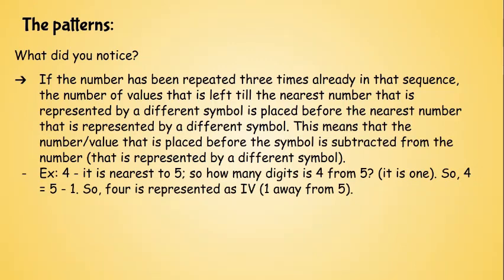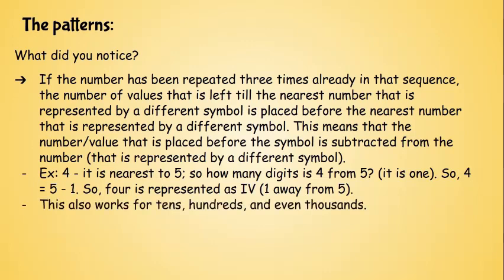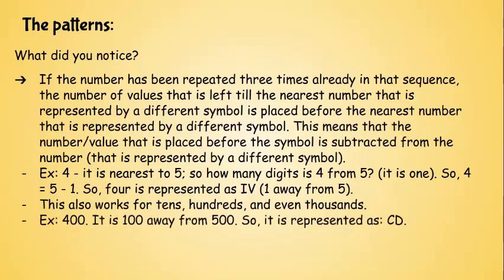So I'm giving you examples. So the example is 4. It is nearest to 5. So in order to represent 4, how many digits is 4 from 5? It is just 1. So 4 is 5 minus 1. But in roman numerals, what you do is if a number is placed before, if a value is placed before another one, it means that it's subtracted. So 4 is represented as IV, which means that it's 1 away from 5. This works for like tens, hundreds, and even thousands.